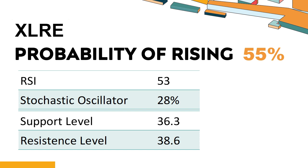XLRE's short-term support level is 36.5. If it falls below 36.5 during this session, it will have a chance to test 36.3. XLRE's short-term resistance level is 38.3. If it breaks through 38.3 during the session, it will look up to 38.6.